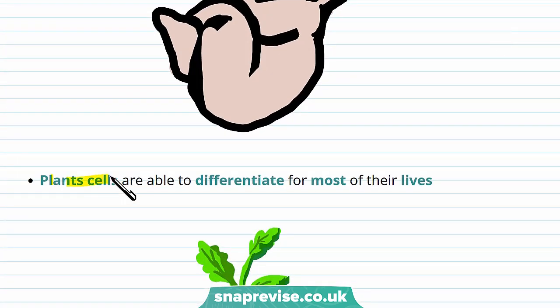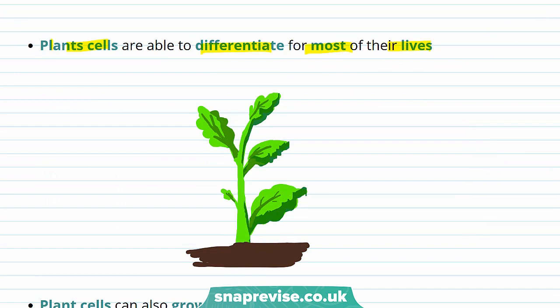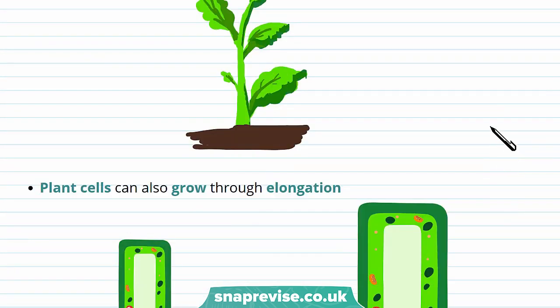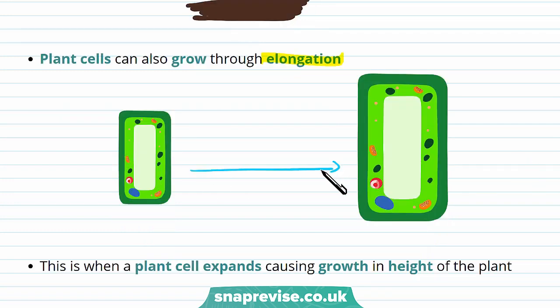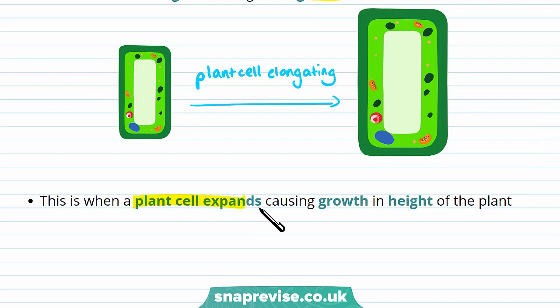Unlike animal cells, plant cells are able to differentiate for most of their lives because plants often grow continuously, such as making new branches. This means plants have to differentiate to produce new parts such as leaves and stems. Cell division in plants mostly takes place through elongation — this is how they grow in height. You can see a plant cell elongating here; elongation is when a plant cell expands, causing growth in height. Plants can also grow through cell division, but this is restricted to the tips of the roots and shoots, in areas called the meristems.